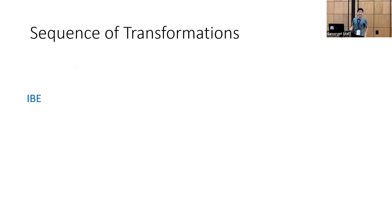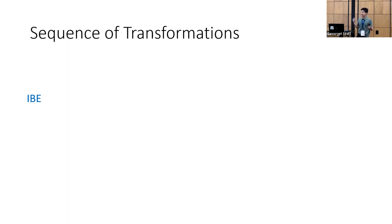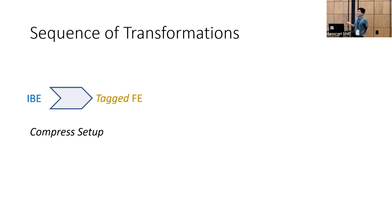How do we get from IBE to dynamic FE? We have a couple of transformations. Perhaps a better way to think about it is we start with existing constructions of static FE schemes, and we want to make keygen and setup more efficient so that the scheme can become dynamic. Starting with IBE within some of these static schemes lets us build an intermediate primitive we call tagged functional encryption.